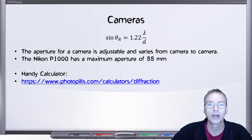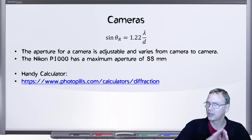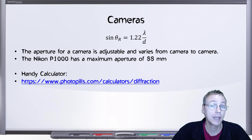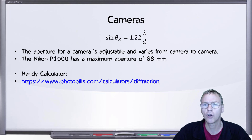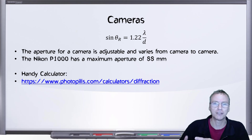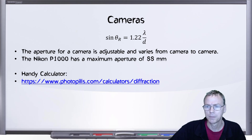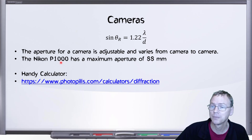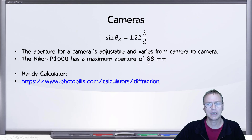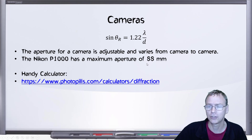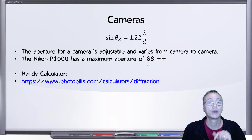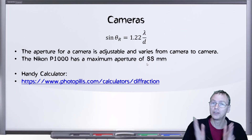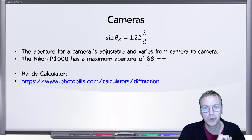The aperture for a camera is adjustable or it may be set to automatic — watch out for that. The aperture for cameras is typically quoted in something called f-stop, which you then have to convert from f-stop into millimeters. As an example, the maximum aperture size available on a Nikon P1000, if I've done my math correctly, is about 88 millimeters — substantially larger than the human eye. And therefore you're going to get a diffraction limit substantially smaller than what we get for the human eye.